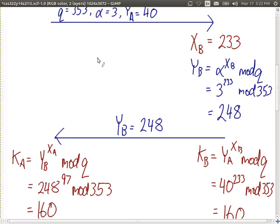And that's the secret. A knows K is 160. B knows K is 160. The challenge is, does C, the attacker, know that K is 160? If the attacker can intercept these two messages and learns Q, alpha, YA and YB, and they also know the algorithm, can the attacker find K? That's where the security of this algorithm comes in. Let's go through and see why it's hard for them to find K.